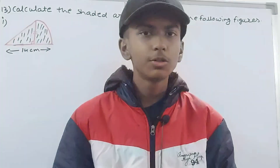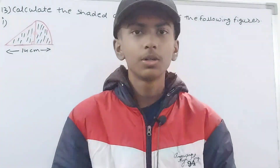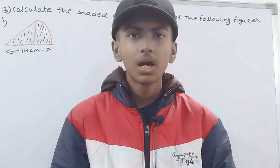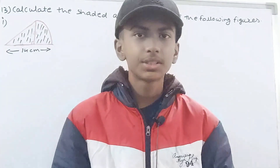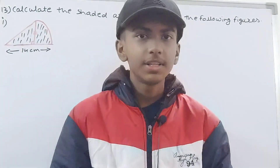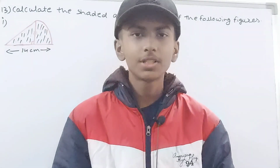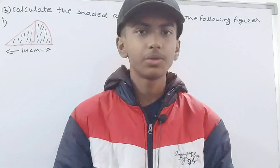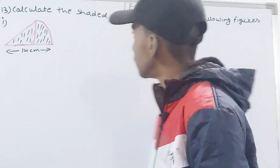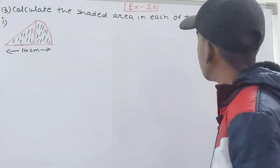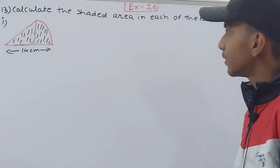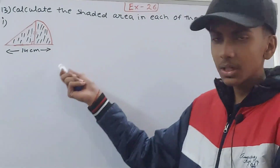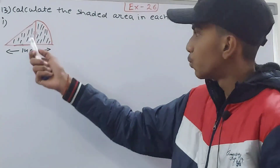Hello friends, welcome back to my YouTube channel 'Unlock Your Learning'. In this video we are going to solve ICSE Mathematics Class 8, Chapter 26 - Circumference and Area of a Circle, Exercise 26, Question 13. This is: calculate the shaded area in each of the following figures. In the first part you can see we have a figure where there is one right angle triangle and one quadrant of a circle.